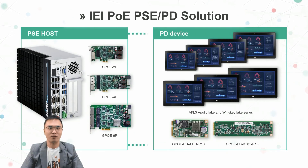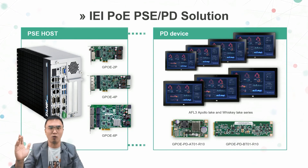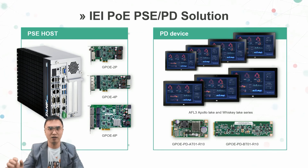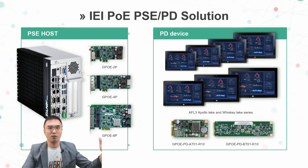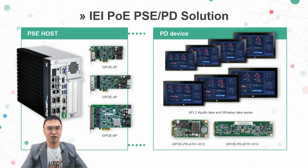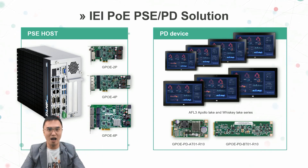To summarize, IEI provides PSE solutions including 4-port, 2-port, and 6-port Gigabit PoE add-in cards that can easily install in your desktop. You can also choose IEI's Tank series embedded box PC. For PD devices, we have the Alpha series panel PC from 7-inch to 21.5-inch as a total solution, with optional PoE PD modules. This is the complete IEI total solution for your reference.